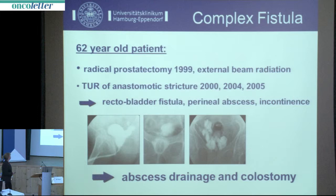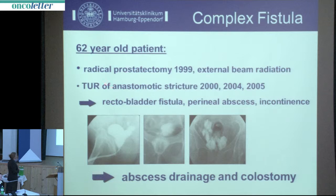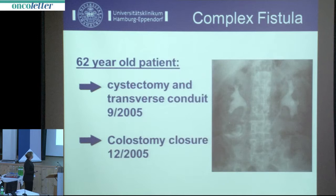A typical case: a 62-year-old patient had radical prostatectomy in 1999 followed by external beam radiation. He developed a stricture of the anastomosis, underwent at least three TURs, then developed a recto-urethral fistula, perineal abscess, and incontinence. We first performed abscess drainage and colostomy, then later performed cystectomy with a transverse conduit and were able to close his colostomy.